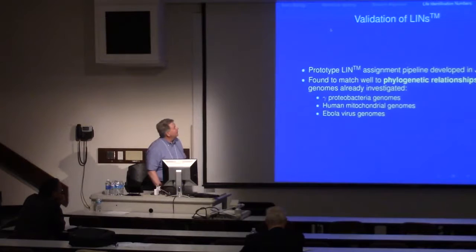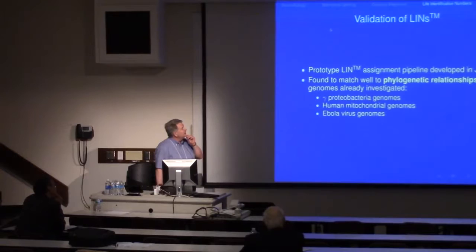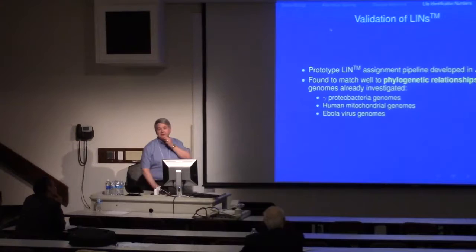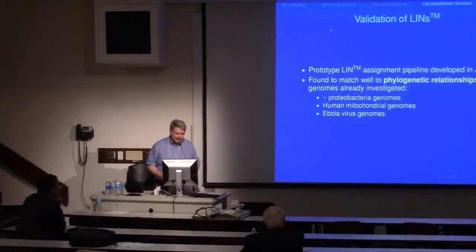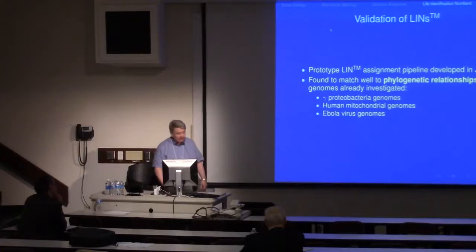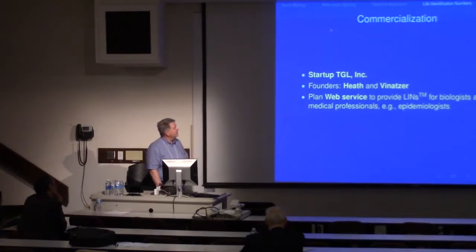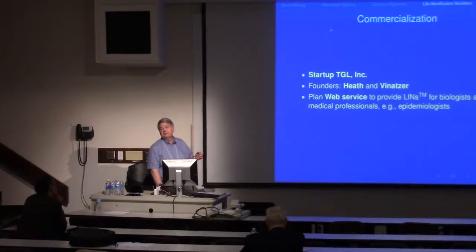The codes are not arbitrary — they have meaning with respect to other genomes. We've prototyped this and used it to compare against known phylogenetic relationships for a number of classes of organisms, finding a good match between accepted phylogeny and what these codes yield. Boris Finatzer and I also have a startup company to provide a web service for this naming, especially for bacteria and viruses with small genomes.